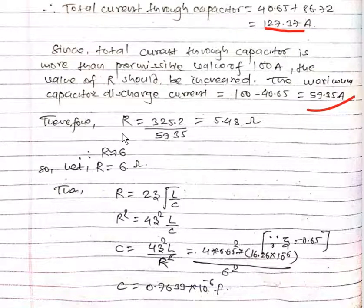Now the new value of R will be 325.2 (which is V) upon I, and we have I as 59.35. We will use this value of current, which gives 5.48 ohms. Let us assume R equals 6 ohms.